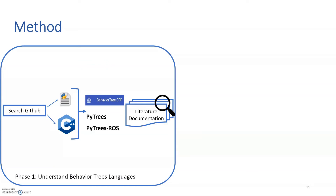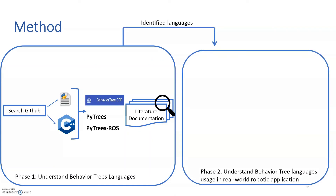We then did a thorough analysis of behavior tree literature and the behavior tree languages' documentation to understand behavior tree concepts. Finally, we studied these concepts in relation to other concepts found in state machines and activity diagrams — the two UML behavior diagrams that are popular and well-understood for modeling behaviors. For our second goal, we mined GitHub repositories for projects using these behavior tree languages, then manually filtered the results to exclude tutorial or course projects, ending up with the 75 behavior tree models.